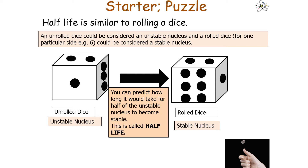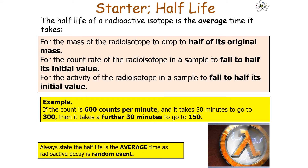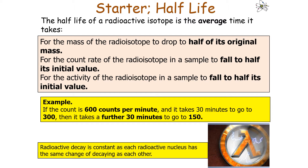This idea is the half-life. The half-life for a particular radioactive isotope is constant, meaning it always takes the same amount of time for a radioactive sample to fall to half of its count rate or activity. We state the half-life as an average time because radioactive decay is a random event — each radioactive nucleus has the same chance of decaying as any other.